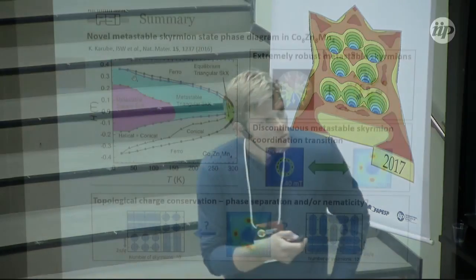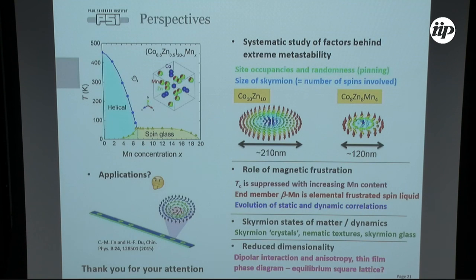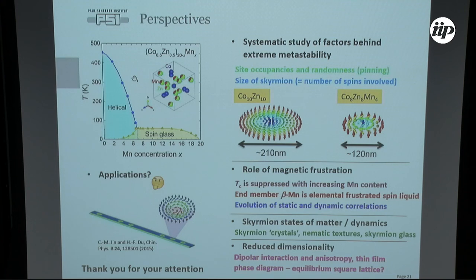To summarize: the main result of this study is the metastable state diagram, which exists in this material due to a combination of topological protection and disorder. We observed a discontinuous metastable skyrmion coordination transition with two possible scenarios which remain to be addressed. Looking ahead, we studied one material but clearly we can quench from higher temperatures down to room temperature to have room-temperature metastable skyrmions. Future directions include systematic studies of the factors behind metastability, magnetic frustration, skyrmion dynamics, and reduced dimensionality. Thank you for your attention.